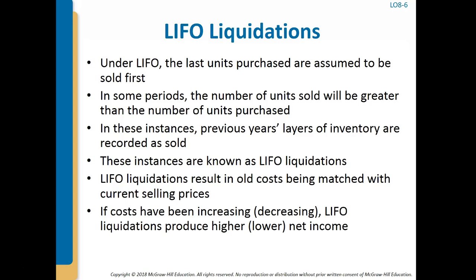When inventory quantities decline during a period, these out-of-date inventory costs are liquidated and cost of goods sold will partially match non-current costs with current selling prices. If costs have been increasing, LIFO liquidations produce higher net income than would have resulted if the liquidated inventory were included in cost of goods sold at current rates. The paper profits caused by including out-of-date, low costs in cost of goods sold is referred to as the effect on income of liquidations of LIFO inventory.